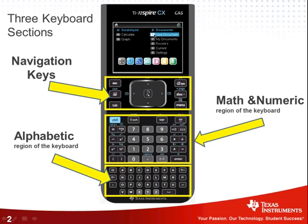Notice how it's A, B, C, D — it's alphabetical order. It's not a QWERTY like other keyboards, and that's because it's allowed on exams. The TI-Nspire is allowed on the ACT, AP exams, SAT, PSAT, and IB exams.